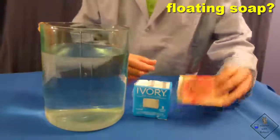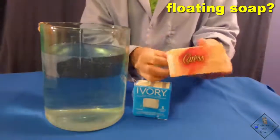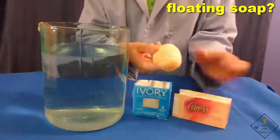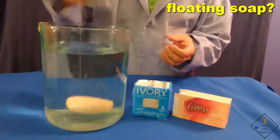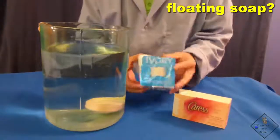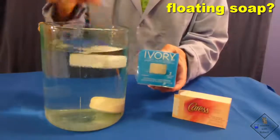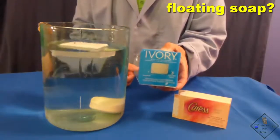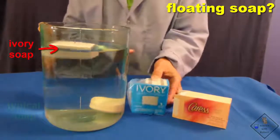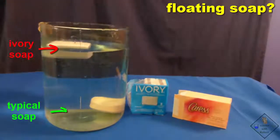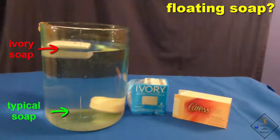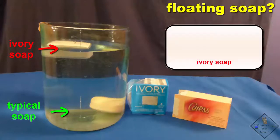If we take a typical bar of soap and place it in water, it will sink. However, a bar of ivory soap is different. When it is placed in water, it floats. The density of a bar of ivory soap is very low and less than that of water. The density is so low because a lot of the volume in ivory soap is taken up by microscopic air pockets that were created during the production process of ivory soap.